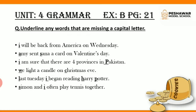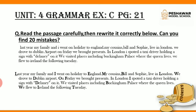Next is Exercise B: underline any words that are missing a capital letter. It's a similar exercise — you just have to underline those words which are not having capital letters but should have them. Like in the first sentence, 'I will be back from America on Wednesday' — I is small and it should be capital, so I have underlined it. Similarly all the sentences are done.